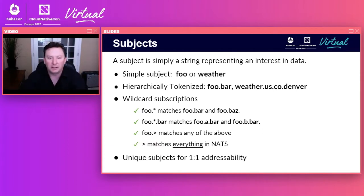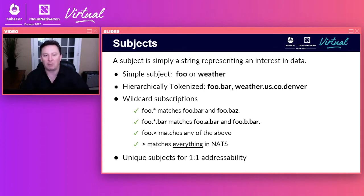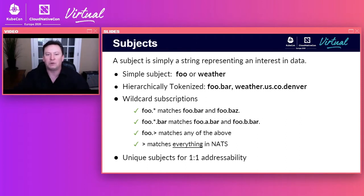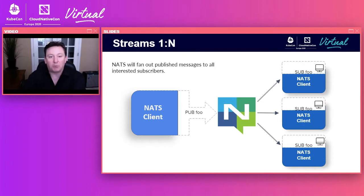Before we talk about patterns, let's talk about subjects and how data gets from one application to another. NATS routes data based on interest — an application registers a subscriber with a subject indicating interest in something. Subjects can be hierarchically tokenized, like weather.us.colorado.denver, allowing wildcard subscriptions for complex filtering. You can also use unique subjects to create a logical one-to-one relationship between applications. NATS will fan out published messages to all interested subscribers — it might be one or a million — and you can add or remove subscribers at any time at runtime with no configuration.